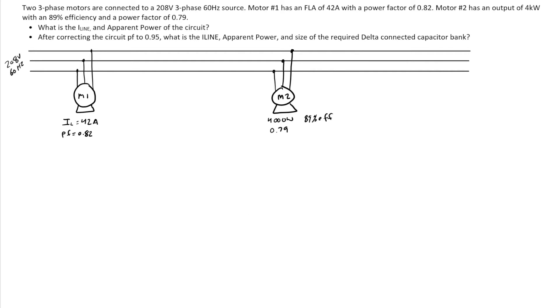So what we want to do here is we want to calculate the I-line and the total apparent power of the circuit. And then we want to correct the entire circuit to 0.95 power factor. Calculate again the I-line, the apparent power, and the size of the required delta capacitor bank.